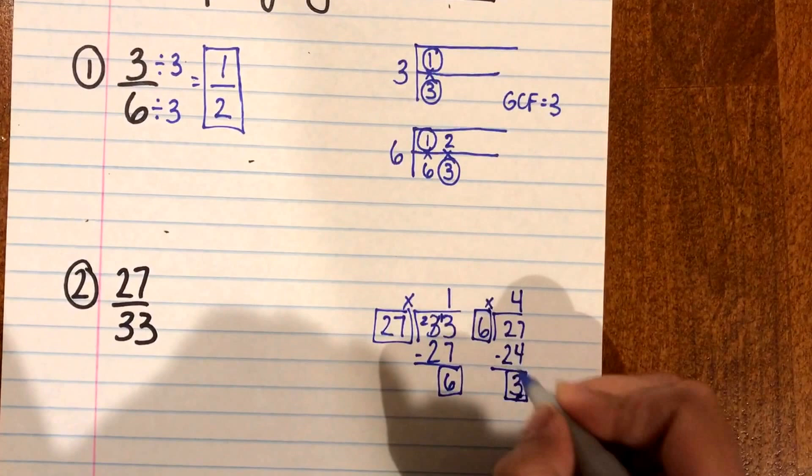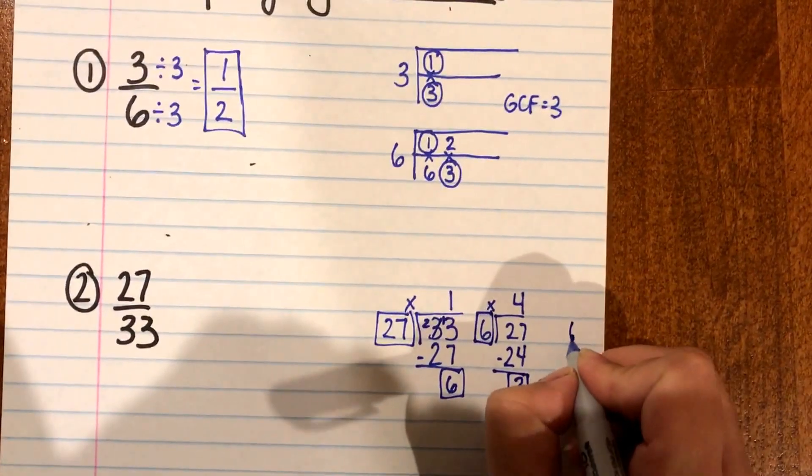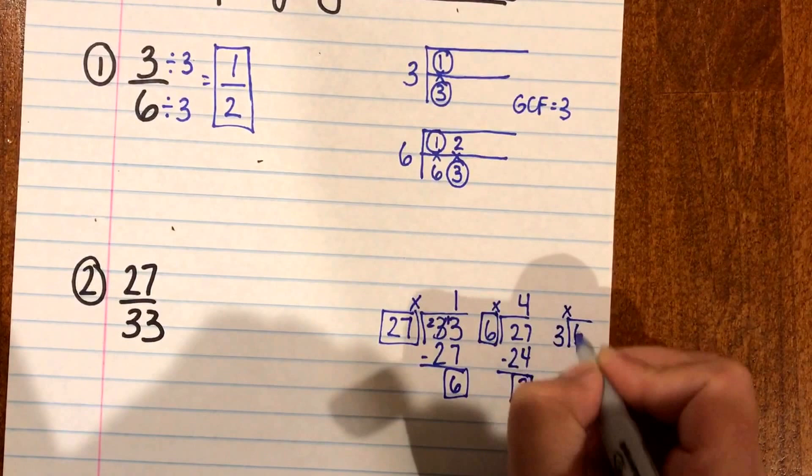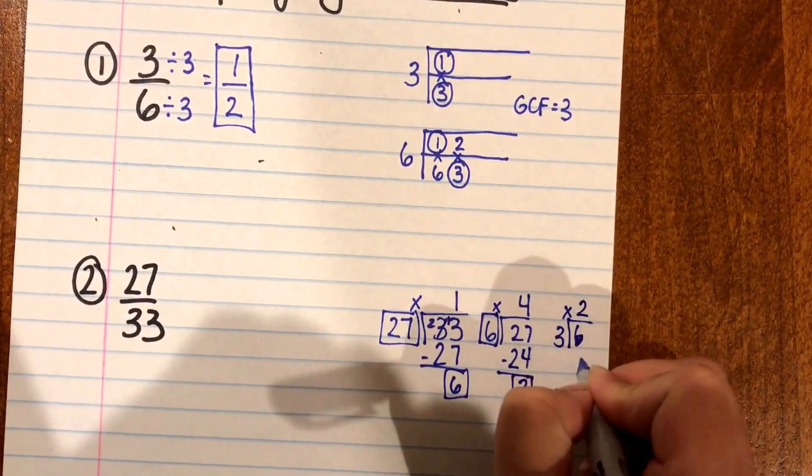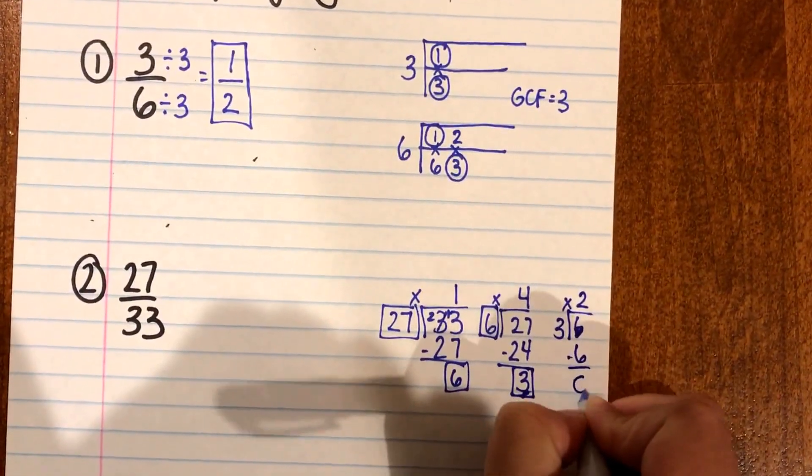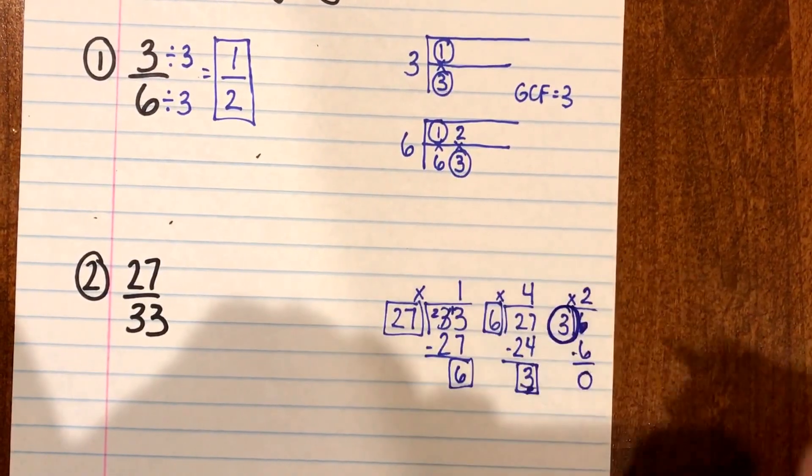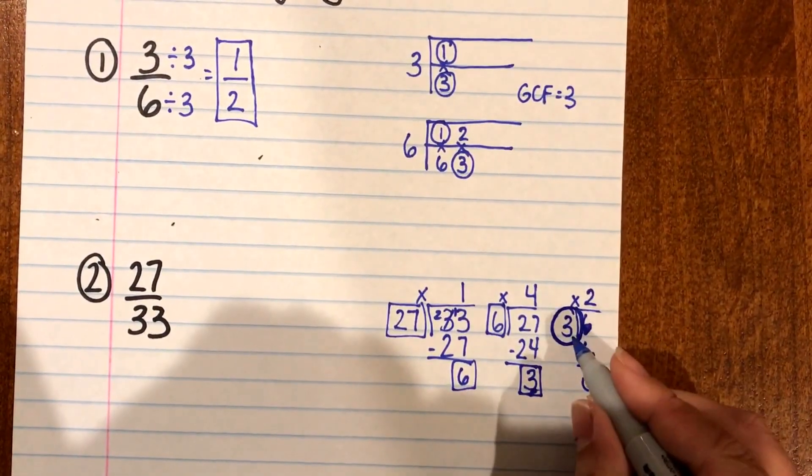I'm gonna use 6 and 3. So 6, my paper keeps moving, divided by 3. And I have 3 times 2 is 6 with a remainder of 0. So here I know that my greatest common factor is my divisor right here of 3. My GCF is 3.